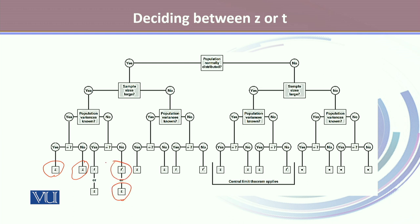On the other hand, if the populations are normally distributed but the sample size is not large, and population variances are known — whether the variances are equal or not equal — we will use Z to calculate the reliability factor for the confidence interval estimate.